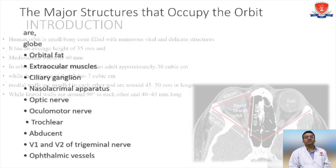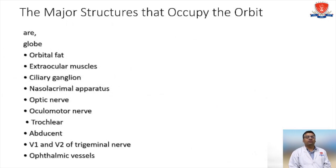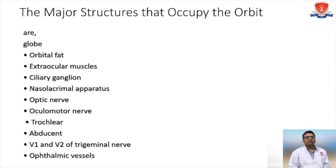The major structures that occupy the orbit are the globe, orbital fat, extraocular muscles, ciliary ganglion, nasolacrimal apparatus, optic nerve, oculomotor nerve, trochlear and abducent nerves, V1 and V2 trigeminal nerves, and ophthalmic vessels.